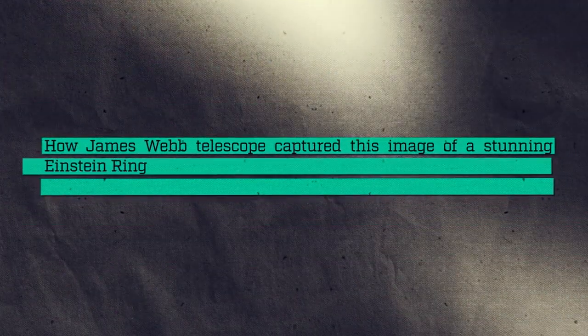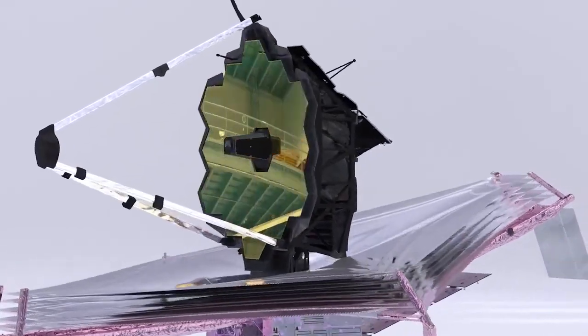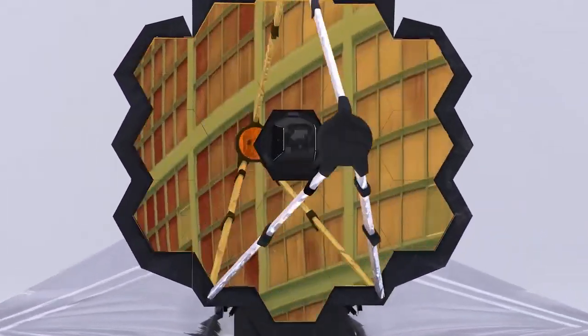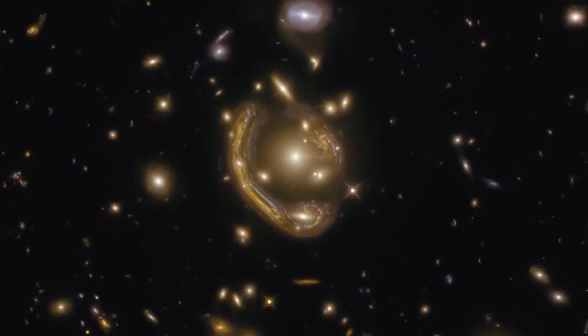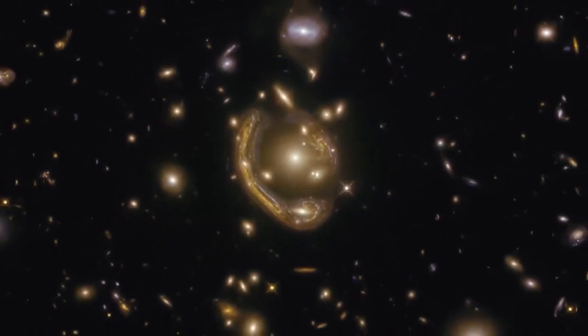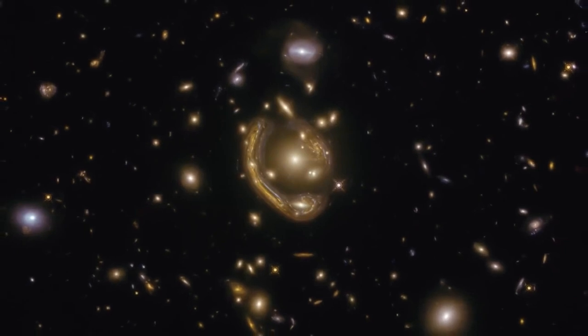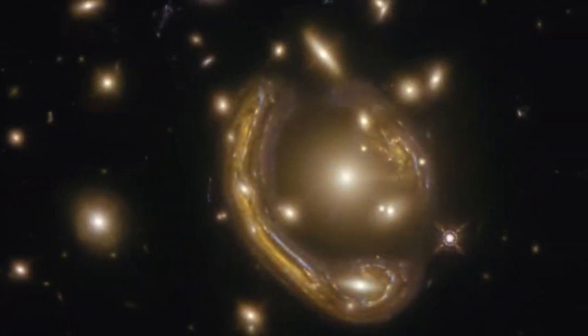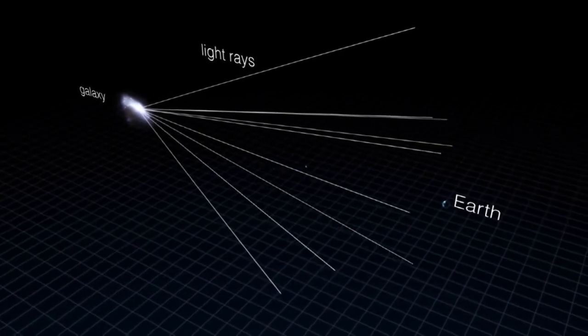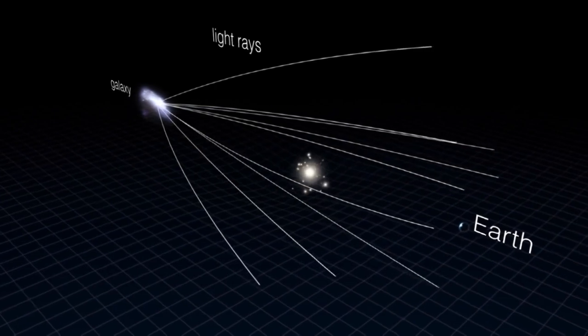How James Webb Telescope Captured This Image of a Stunning Einstein Ring. The image was created using details captured by James Webb's MIRI detector. It was also spotted using the telescope's NIRCam detector. The picture was colorized by reddit user spaceguy44. The image of the Einstein ring is remarkable because this kind of occurrence doesn't happen every day. An Einstein ring is primarily when light from a galaxy or star passes another galaxy or a massive object en route to Earth.